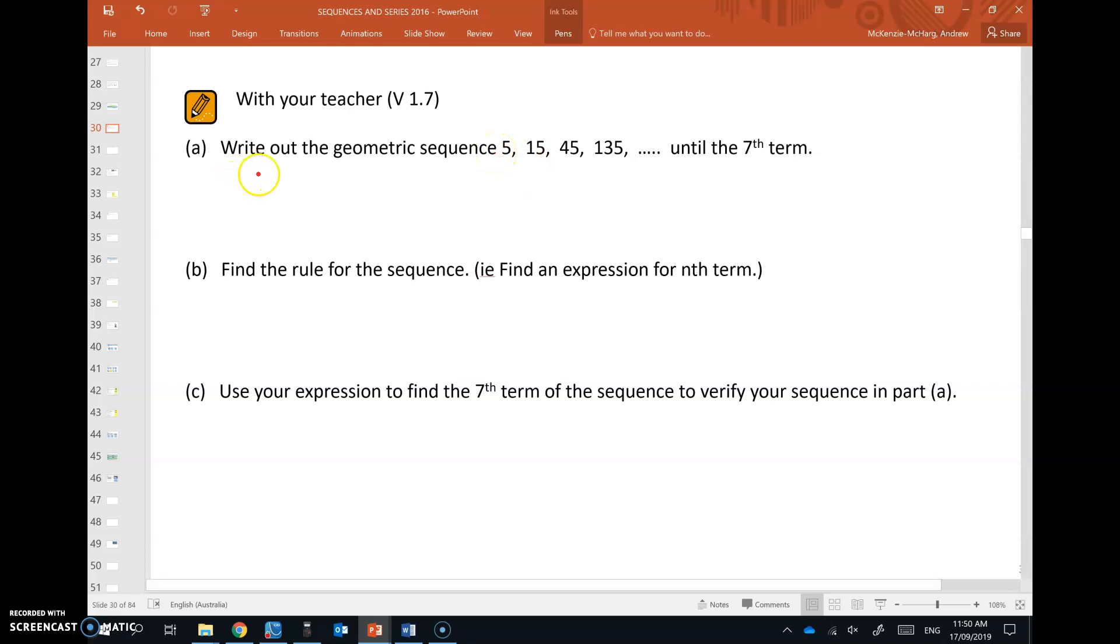But just in case you can't see, if we do 15 over 5 that gives us 3 and 45 over 15 also gives 3. So clearly the common ratio is equal to 3. We're multiplying by 3 each time. So that means we're going to go 135 by 3 which gives 405. And if we multiply that by 3,